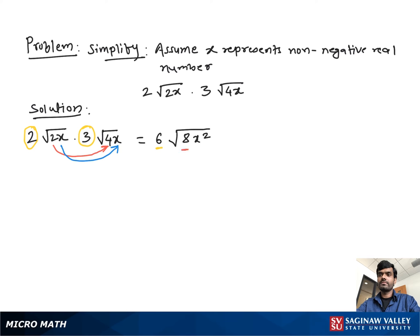Then we simplify the square root 8x square. So we find out the perfect square factor of 8 which is square root 4 times square root 2, which is square root 8 times square root x square.